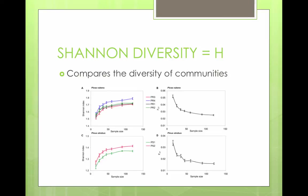Shannon diversity, which uses the symbol capital H, compares the diversity of communities. For example, if you took a sampling from a community of an organism, what would the chances be that it would actually show up? It compares the relative abundance of each species. The higher the H value, the more diverse the ecosystem.